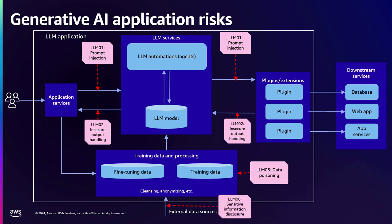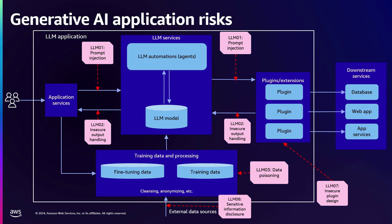Another aspect is sensitive data disclosure — if your training data is not cleansed or anonymized appropriately, it is highly likely the model will produce responses containing those details. And last but not least, insecure plugin design: if there's no proper authorization or authentication on your plugins, your application may call an external plugin and perform actions you don't intend it to.